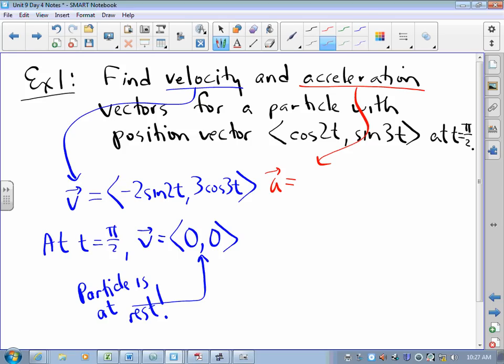As for acceleration, acceleration is the vector whose components are the derivatives of those over there. So that's negative 4 cosine 2t and negative 9 sine 3t.